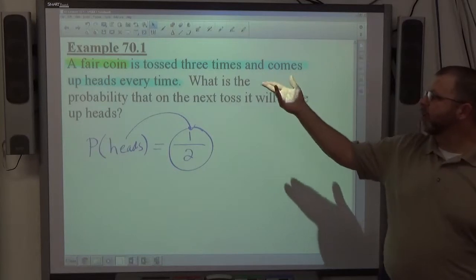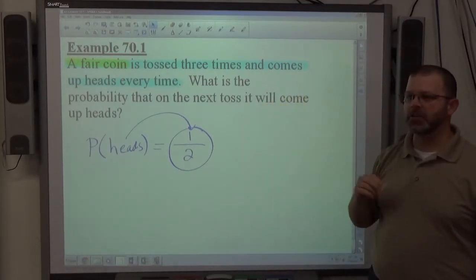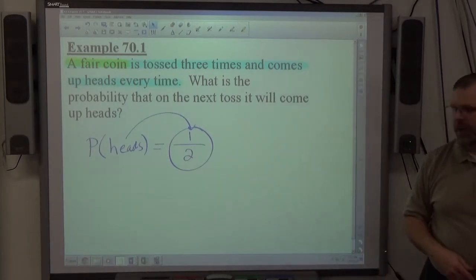And again, if it's said a fair coin is tossed three times, comes up tails every time, what's the probability of getting heads in the next flip? Still one half because there's still one head out of two sides. So that's the probability of getting heads.